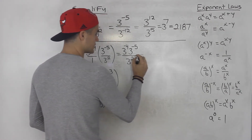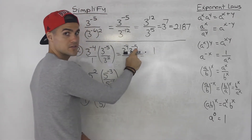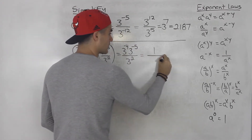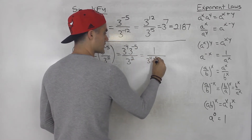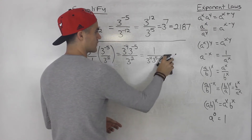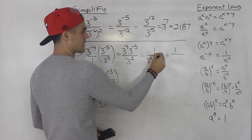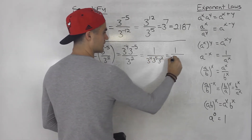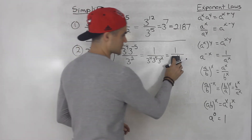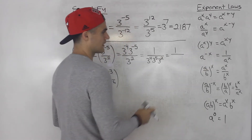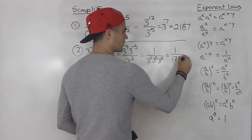What I prefer is to first bring the negative exponents down. Nothing is left in the numerator, so we have 1 on top. The denominator becomes 3 to the positive 4 times 3 to the positive 5 times 3 to the positive 2. Adding 4 plus 5 plus 2 gives 3 to the 11, so the answer is 1 over 177,147.